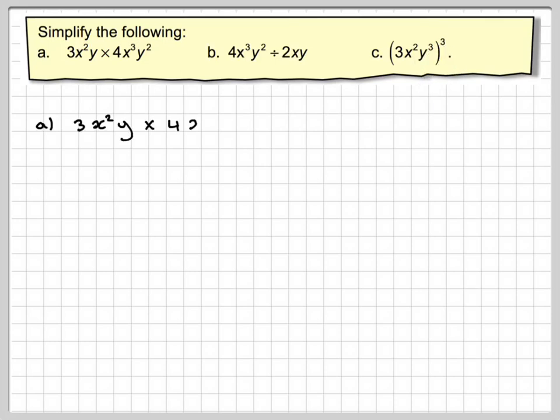Right, so we've got 3x squared y times 4 times x cubed times y squared. Well, 3 times 4 is 12. We're going to be using this rule: a to the m times a to the n is equal to a to the m plus n. So we've got 12. x squared times x cubed is the same as x to the 2 plus 3. And then y times y squared is the same as y to the 1 plus 2.